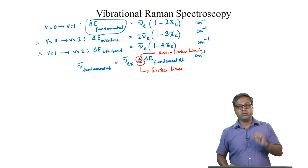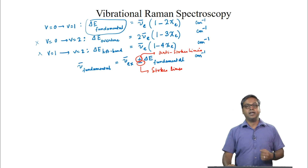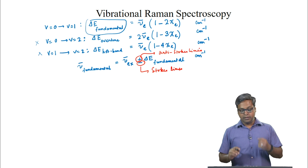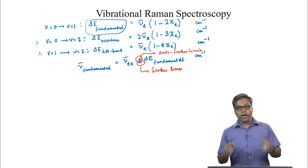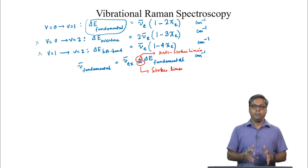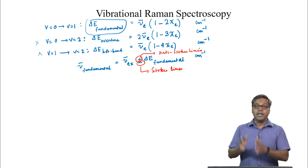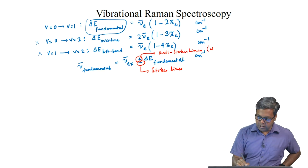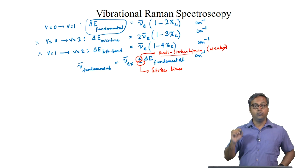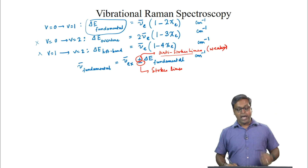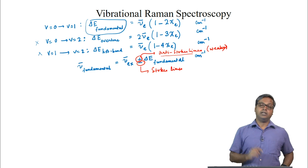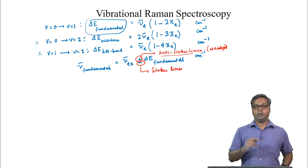For the Stokes lines, the molecule has gained energy at the expense of the radiation, which is why the frequency or wave number for the Stokes lines is less than that of nu-bar_excitation. The anti-Stokes lines are often too weak to be observed, as very few molecules exist in the V=1 state at room temperature.